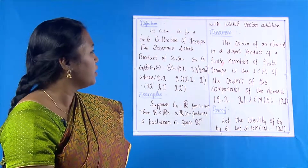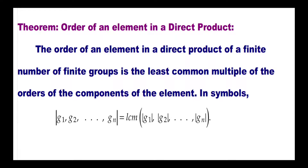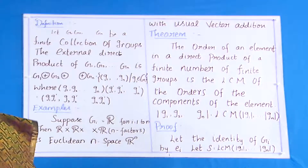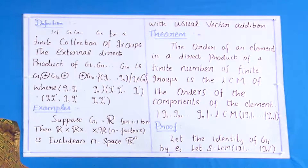Let us now state the theorem: the order of an element in a direct product of a finite number of finite groups is the LCM of the orders of the components of the element. That is, the order of (g₁, g₂, …, gₙ) is equal to the LCM of the individual orders of g₁, g₂, …, gₙ. Proof: let the identity of Gᵢ be eᵢ.